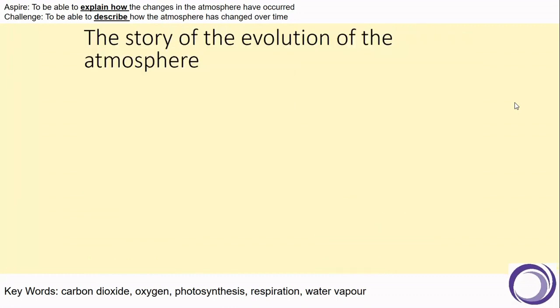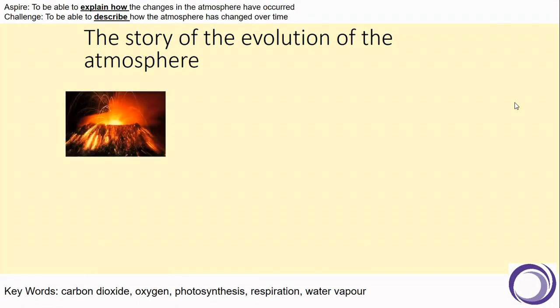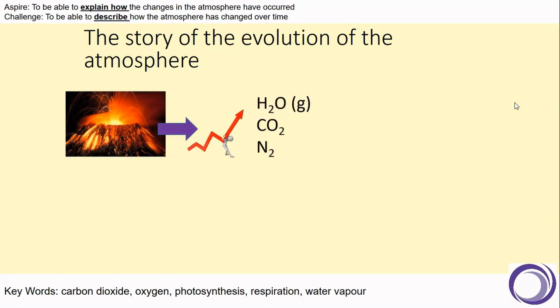So now we need to look at how those changes occurred. As we saw earlier, we think that the early Earth had a lot of volcanic activity. And that can release high levels of carbon dioxide gas, nitrogen, and water vapour, and also ash.